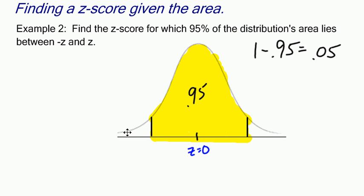If this is symmetric, then this tail that's not shaded and this tail that's not shaded will each have an area of 0.025 or 2.5%. So 2.5% or 0.025 is the same thing.